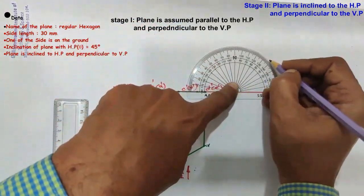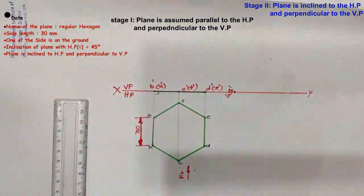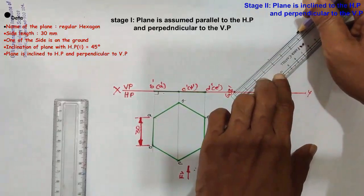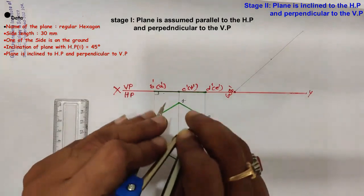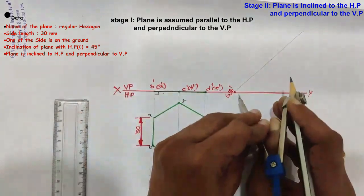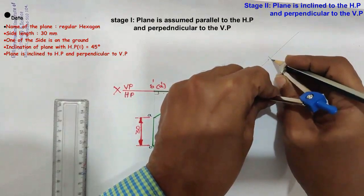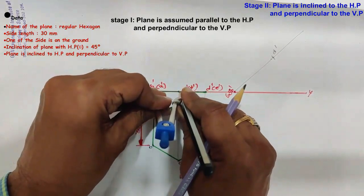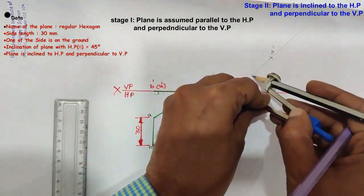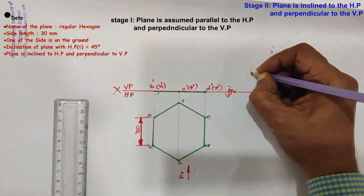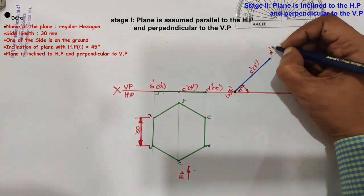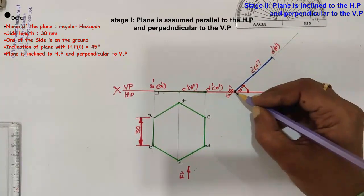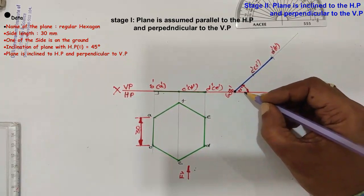Passing through A' and B', draw a 45-degree inclination line to the XY line. Then take B'D' as radius with B' as center, draw an arc and name this point D'. Similarly, take B'C' as radius with B' as center, draw an arc on this 45-degree inclination line and name this point C'. This gives the front view image of the hexagonal plane when resting on side AB on HP with its surface making 45 degrees to the HP.